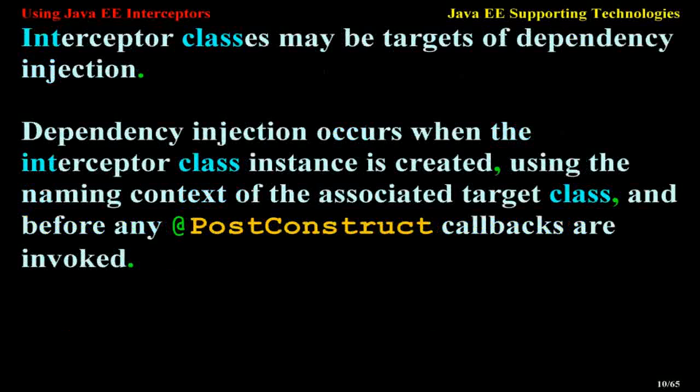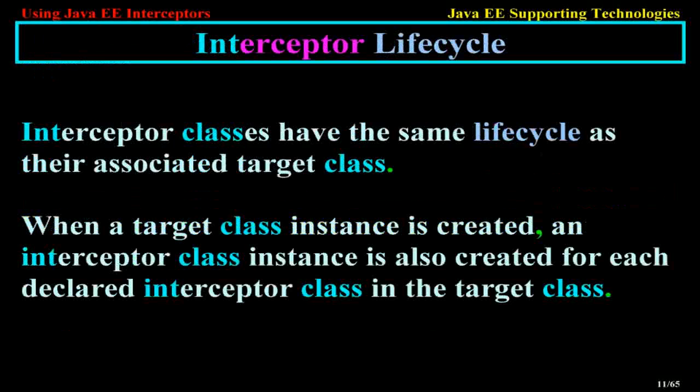Interceptor classes may be targets of dependency injection. Dependency injection occurs when the interceptor class instance is created, using the naming context of the associated target class, and before any post-construct callbacks are invoked.